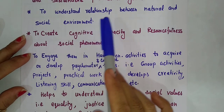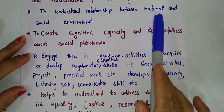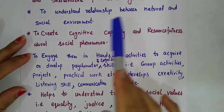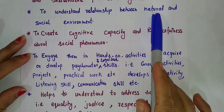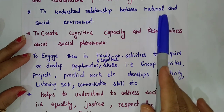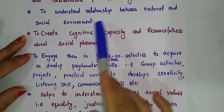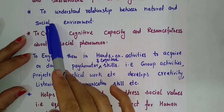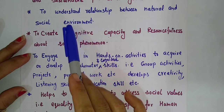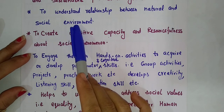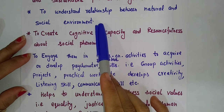For example, the natural environment includes rain — rain is a natural process. Through rain harvesting, we are saving water — that is the social application of a natural process. Similarly, trees and plants are in the natural environment, but the fruits and vegetables that we use are related to the social environment.